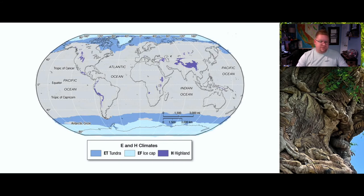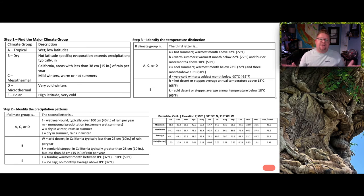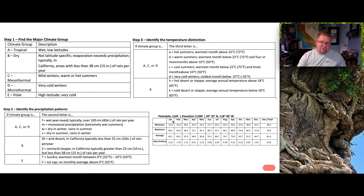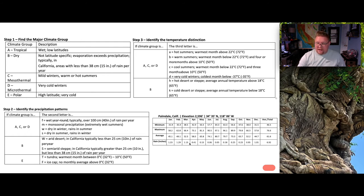Now we're going to learn how to actually use the classification chart — it's an activity putting it all together. We'll interpret it like a build-your-own adventure, broken into three steps. In the bottom right-hand corner is average climate and weather data from Palmdale, California, including elevation, latitude, longitude, and for each month the minimum and maximum precipitation and temperature, plus averages. The most important values for us right now are those averages — average temperature throughout the year and average rain per month.